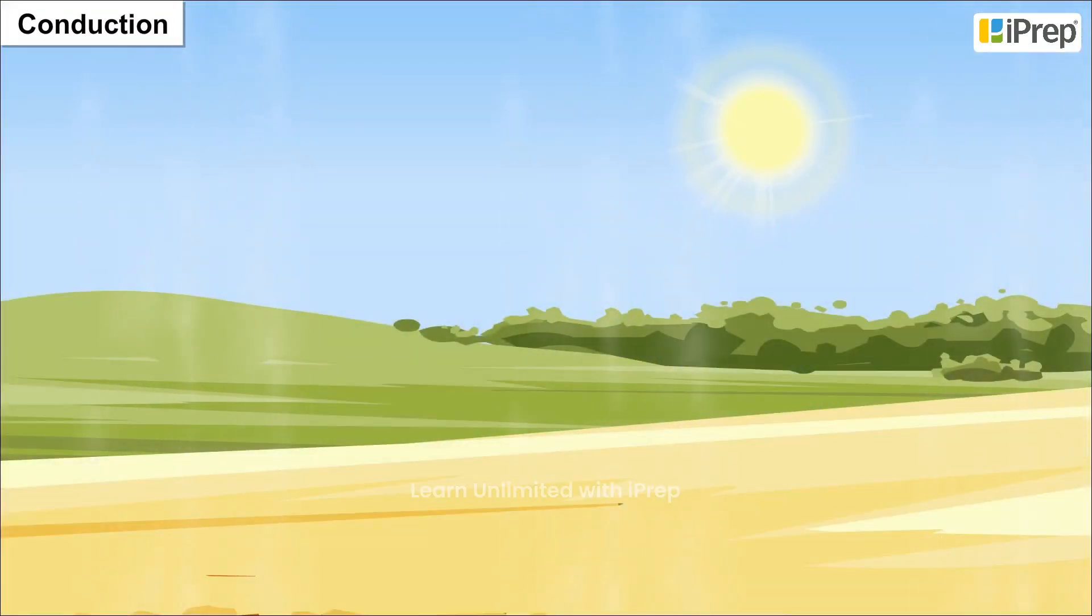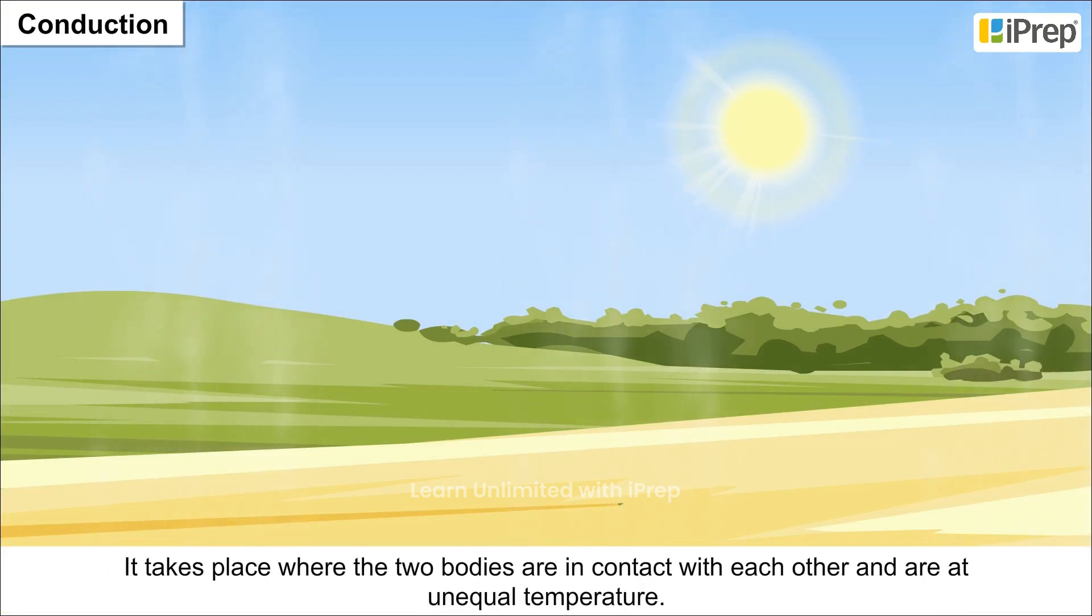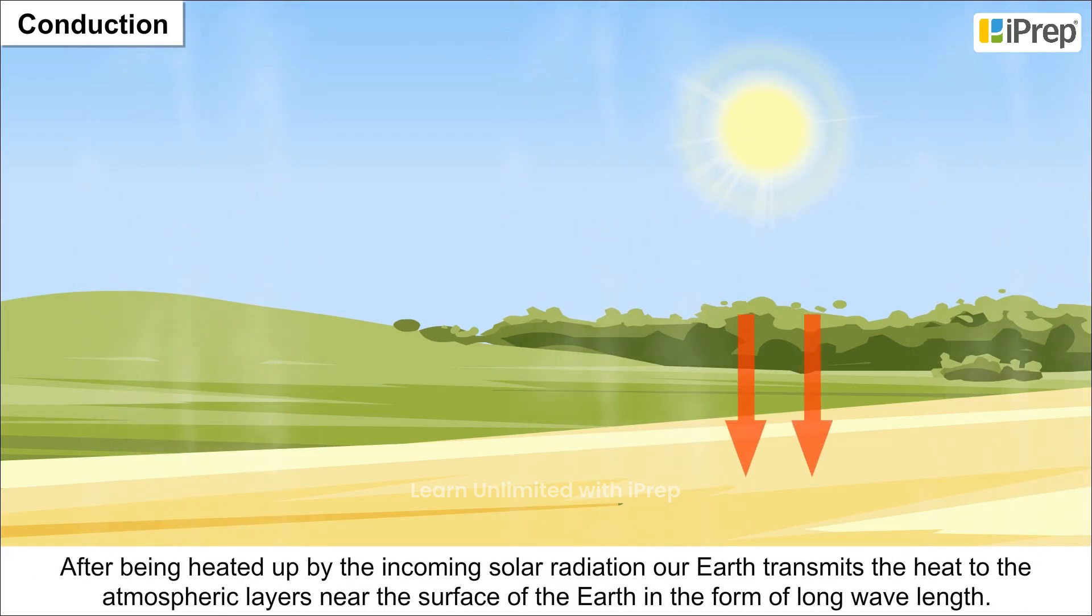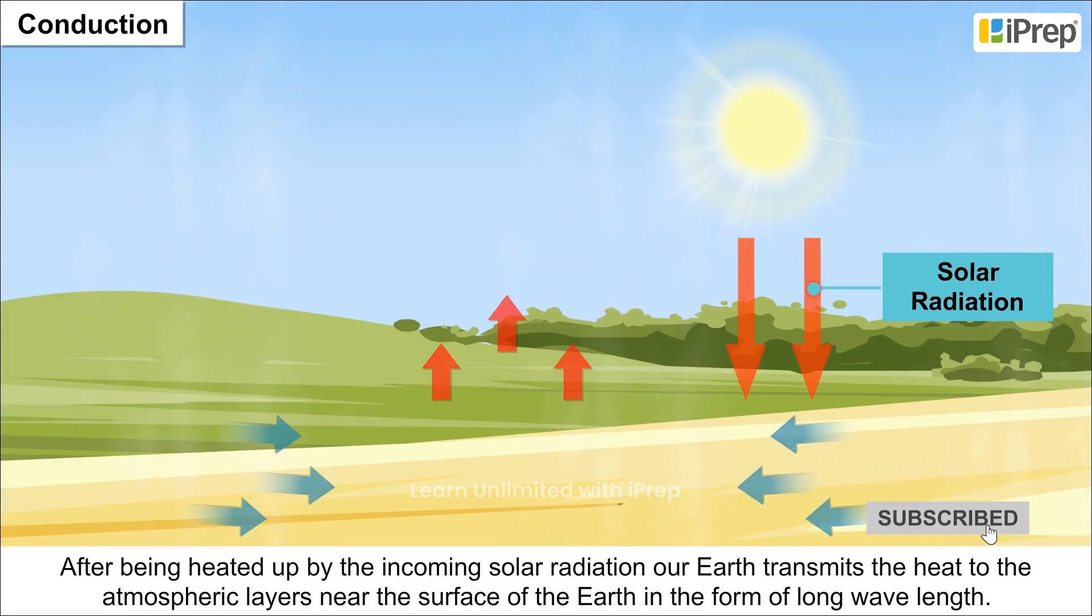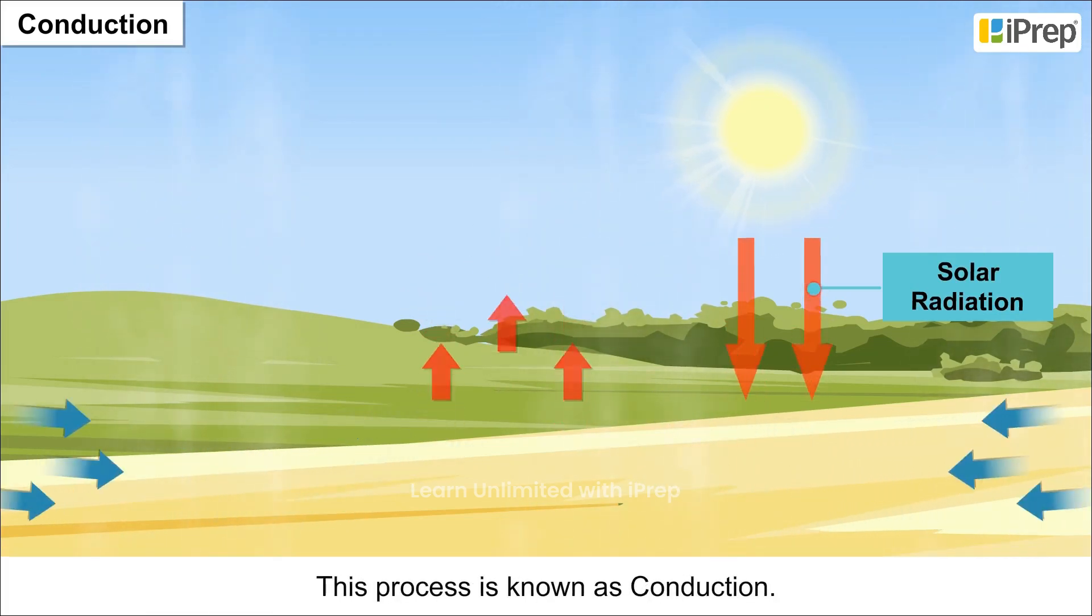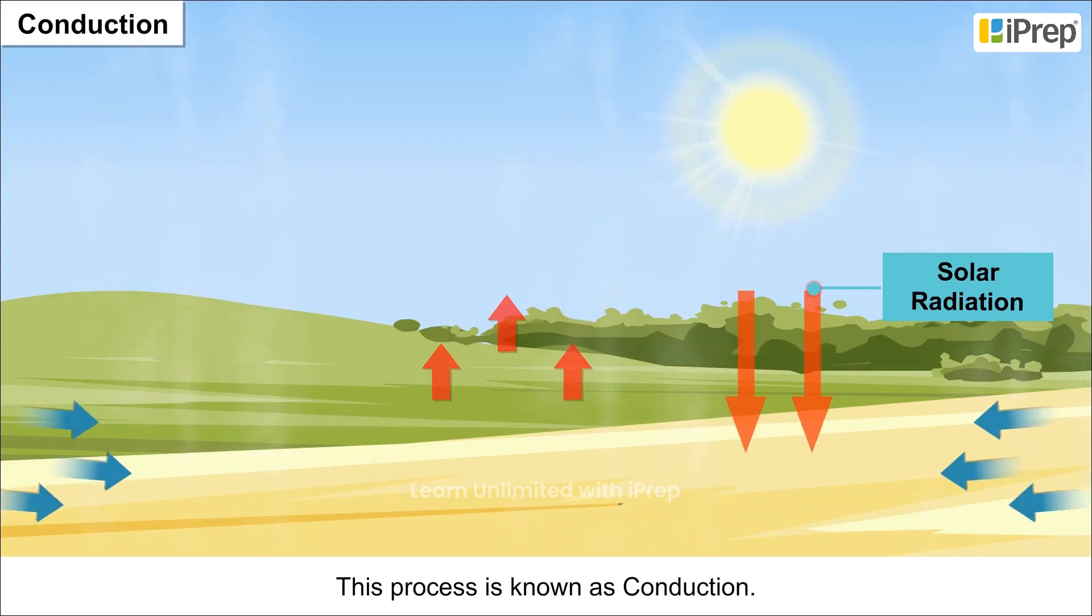Conduction: It takes place where two bodies are in contact with each other and are at unequal temperature. After being heated up by the incoming solar radiation, our Earth transmits the heat to the atmospheric layers near the surface of the Earth in the form of long wavelength. This process is known as Conduction.